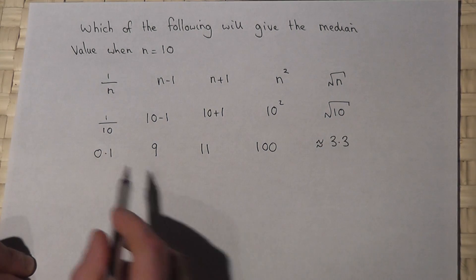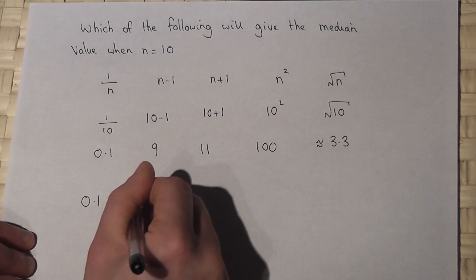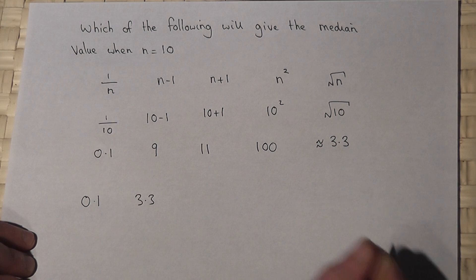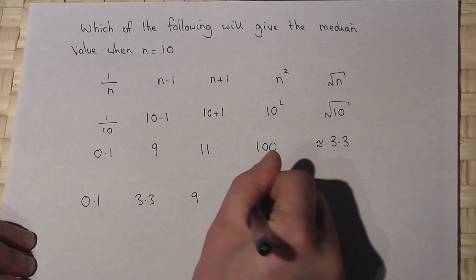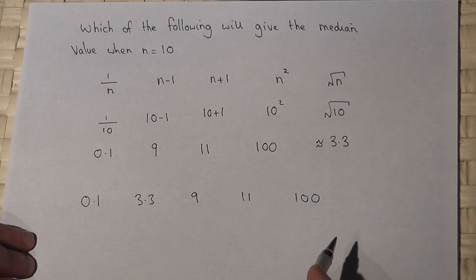So if I put these numbers in order, then 0.1 is the smallest, then we have 3.3 roughly, then we have 9, then we have 11, and then we have 100. So of these five numbers,